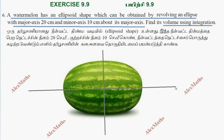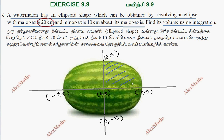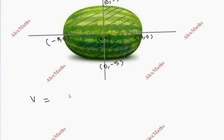This is an ellipsoid shape. The major axis is 20, so the origin is at 0,0. The major axis endpoints are at 10,0 and minus 10,0. The minor axis endpoints are at 0,5 and 0,minus 5. The volume integral is from minus 10 to 10 of pi y² dx.